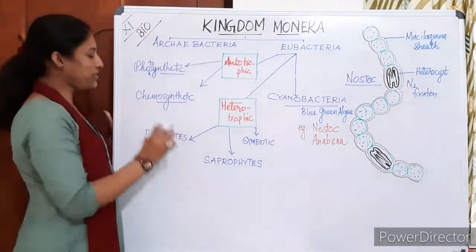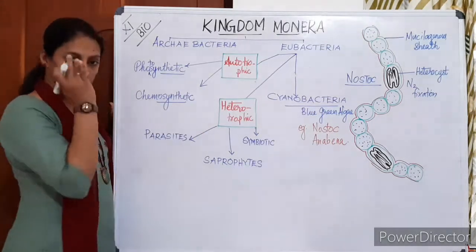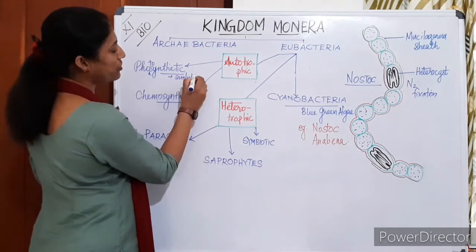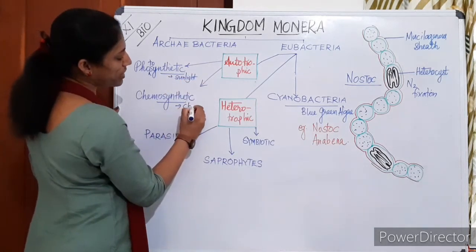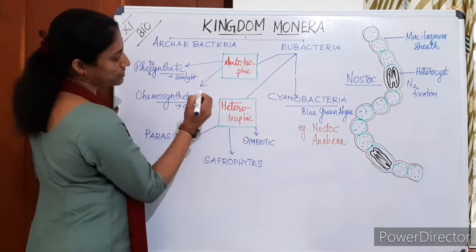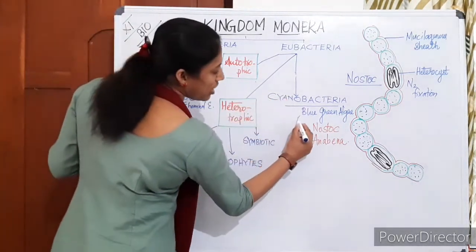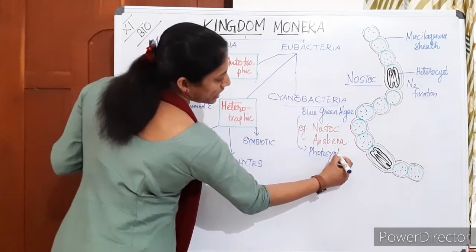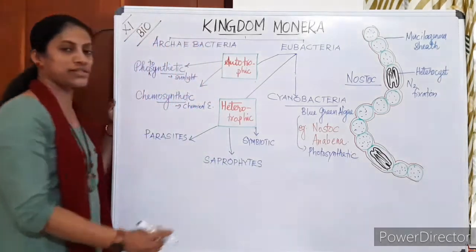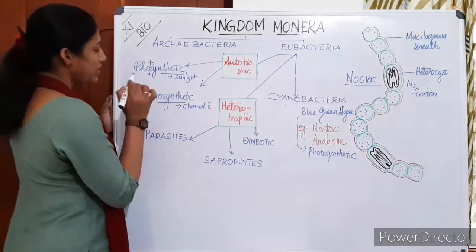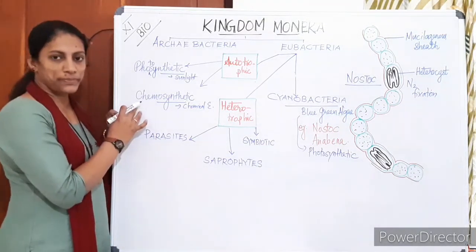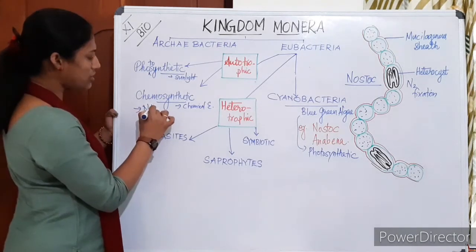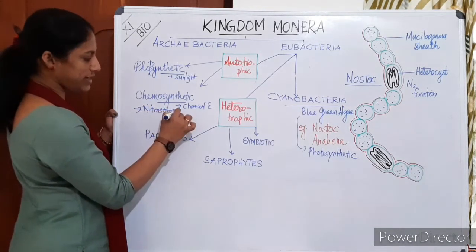Photosynthetic members use sunlight for producing food, while chemosynthetic members use chemical energy. Cyanobacteria members are also photosynthetic. An example of chemosynthetic bacteria is Nitrosomonas and Nitrococcus. During the oxidation process they derive energy for preparing food. We will discuss this in detail in the chapter Mineral Nutrition.